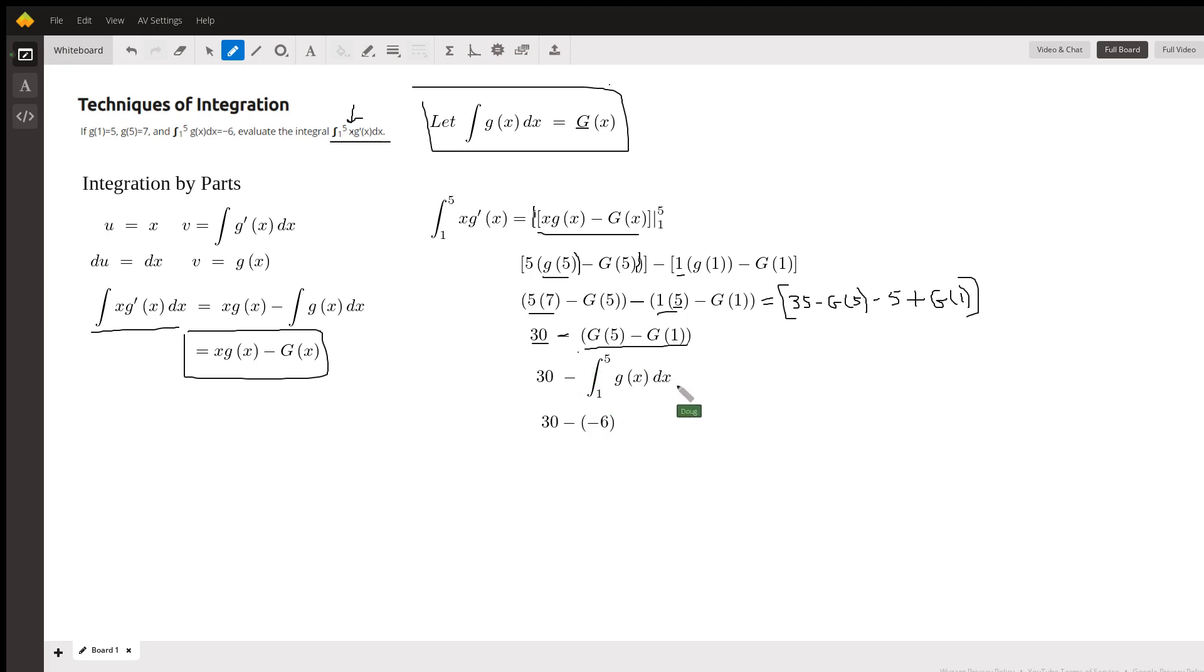But we're told that this has a value of negative 6. So 30 minus a negative 6 equals 36. Okay, there you go. Hope that helped. If you have any questions, post a comment.